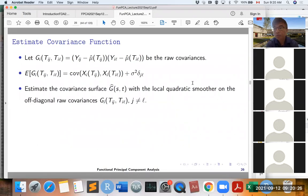So then, what we can do is that we will estimate the covariance surface G(S,T) with a local quadratic smoother on the off-diagonal raw covariances G_I. You can see here the expectation of the G_I on the off-diagonal elements will be just equal to this covariance function, because delta_JL here will be equal to 0. So we will just use the off-diagonal raw covariance G_I. We will do the smoothing on this off-diagonal raw covariance G_I, and we will get the estimate of the covariance surface Ĝ(S,T).